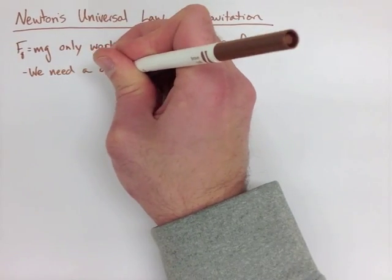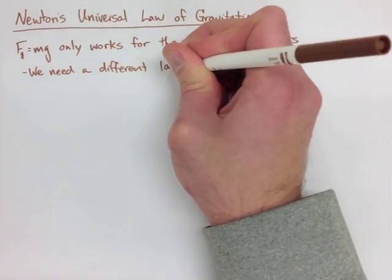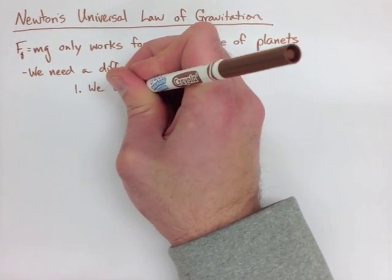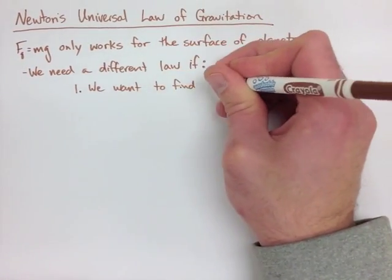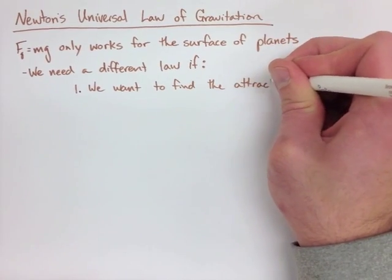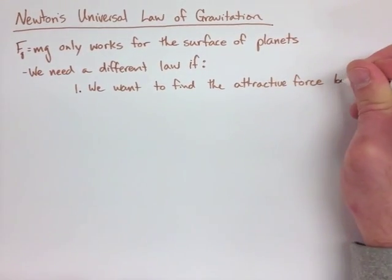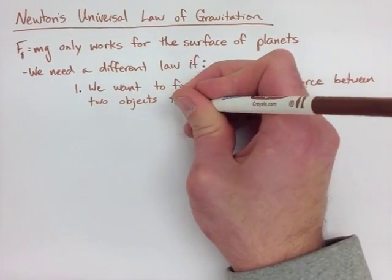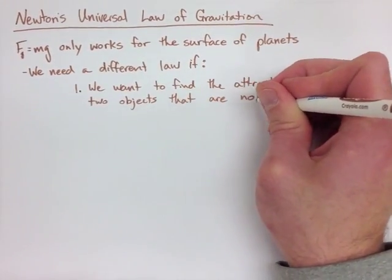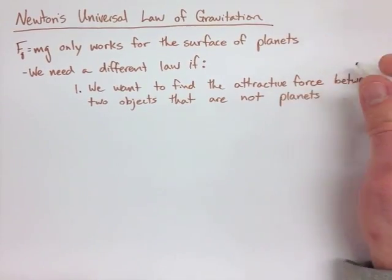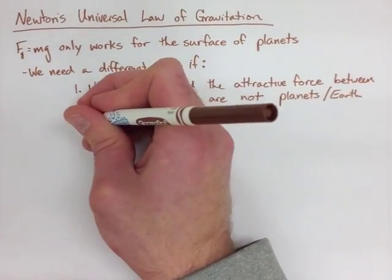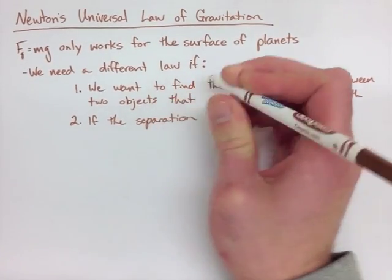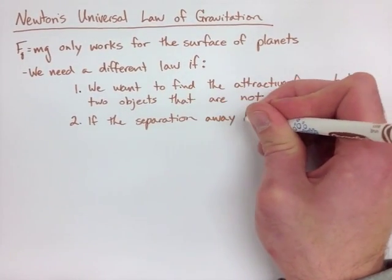There's kind of two situations where we need something else. We need a different law if one is if we want to find the attraction of two objects that aren't actually planets, or Earth in most cases for us. The second being, if the separation from Earth is too far, that g is actually no longer equal to 9.81 meters per second squared.